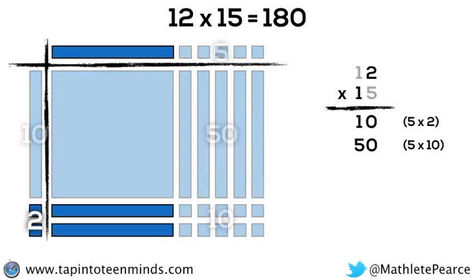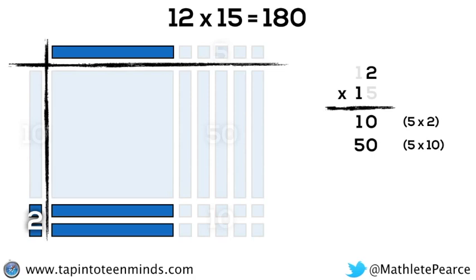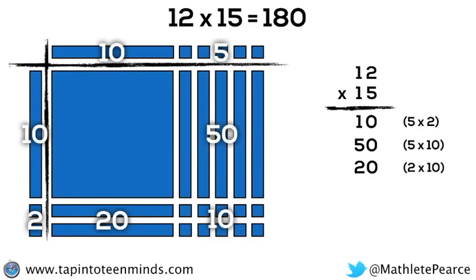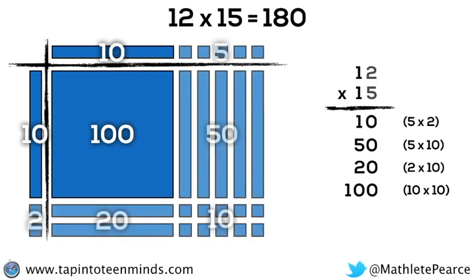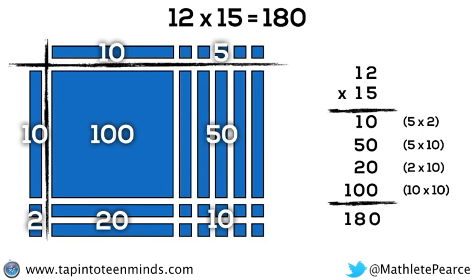Then we move on to multiply 1 by 2. But wait again, the 1 represents a single 10 rod to be multiplied by 2 1s. That result will give us 20. And finally, the last partial product or chunk is multiplying one 10 rod by another 10 rod or 10 groups of 10 for 100 flat. Then we sum up the partial products and we arrive at our product of 180.